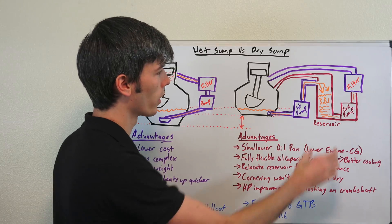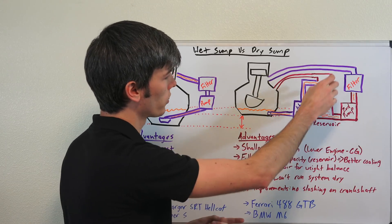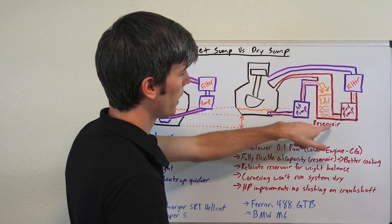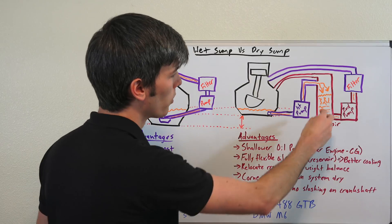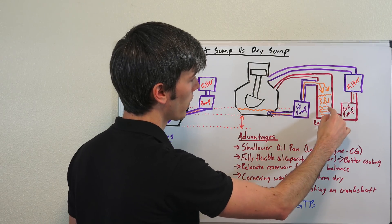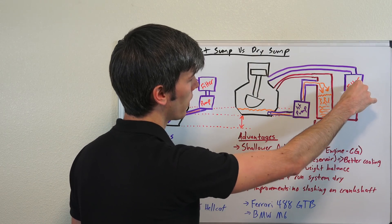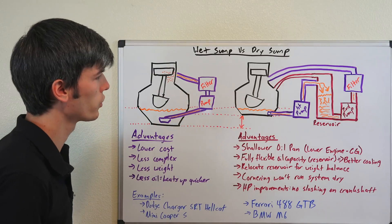So you've got this tall cylindrical reservoir right here which that oil accumulates in, and then you've got a secondary pump which picks up from that secondary reservoir, sends that then through the filter, and then circulates through the engine.